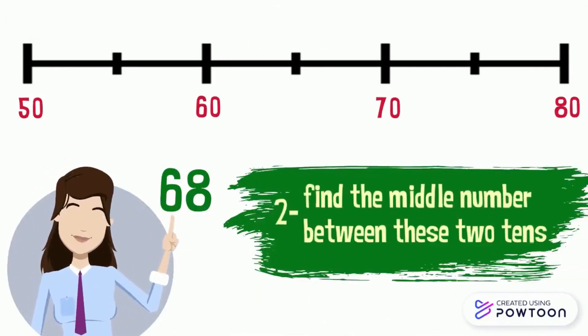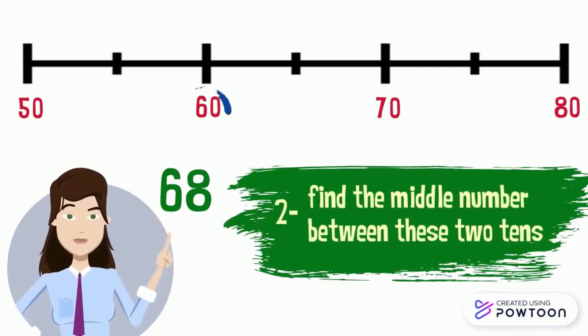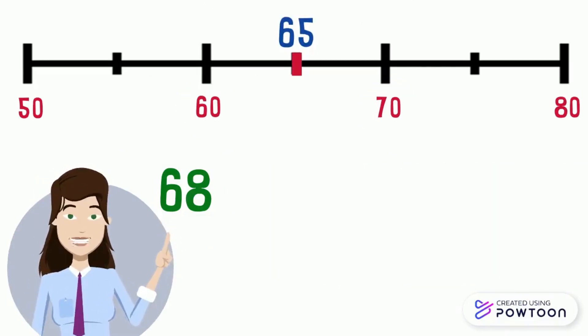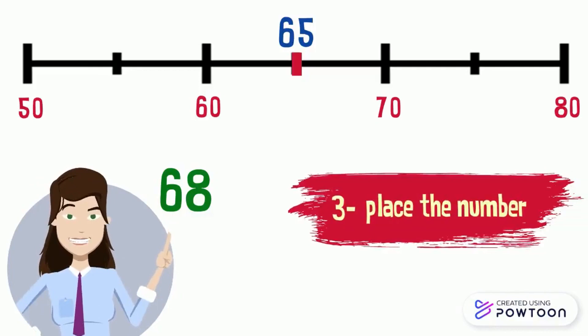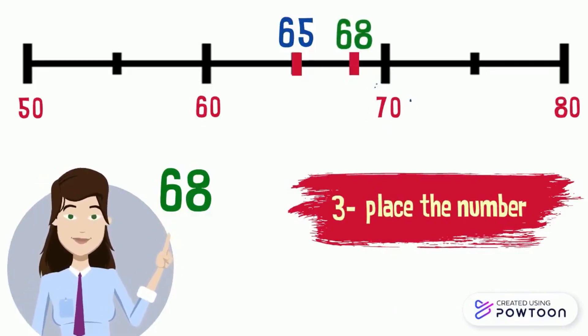Then we should find the midpoint between these two tens, which is as close to 60 as it is to 70, so it is 65. Now place the number 68 on the number line. 68 is more than 65, so the nearest 10 to 68 is 70.